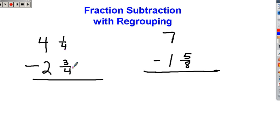4 and 1 fourth take away 2 and 3 fourths. We can't do that because we can't take 3 away from 1. The way we do this is we borrow from the 4 and make it a 3. What I just took away from the 4 was one whole, and 1 whole in fourths language is 4 fourths.